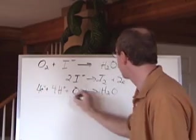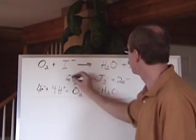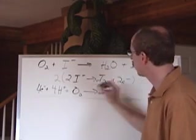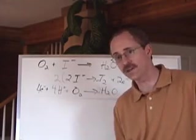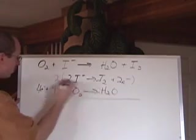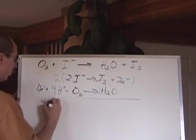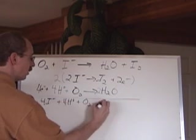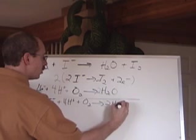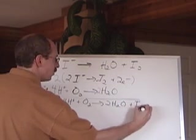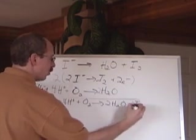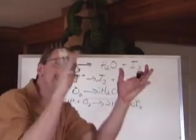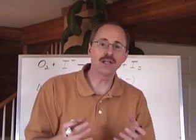When we add these two reactions together, we've got to make sure that we double up on this one, because remember, two times two, four electrons lost, must equal four electrons gained. And so the net reaction is going to be, when we do that, it's four I negatives plus four H positives plus O2 makes two H2O's plus I2. How many I2's? Two of them.